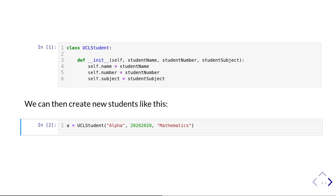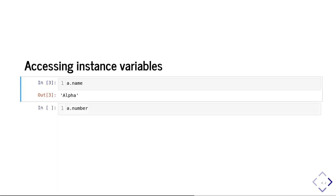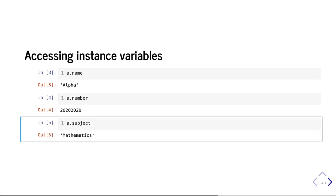Once run, I have a new Python variable named 'a' whose type is UCL student — a student whose name is alpha, student number is 20202020, and subject is mathematics. To access these instance variables, we use dot notation. So 'a.name' gives back 'alpha', 'a.number' gives you the student number, and 'a.subject' gives you their subject, which was mathematics. That's how we get back the instance variables we supplied when we created our new UCL student object.